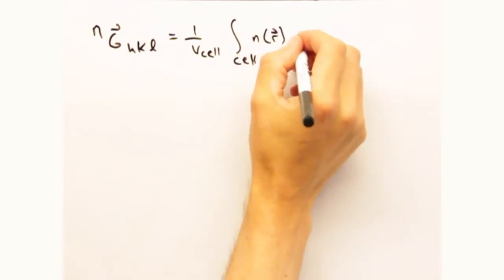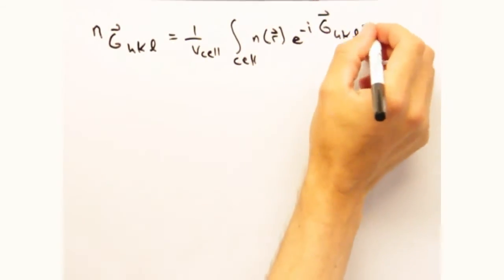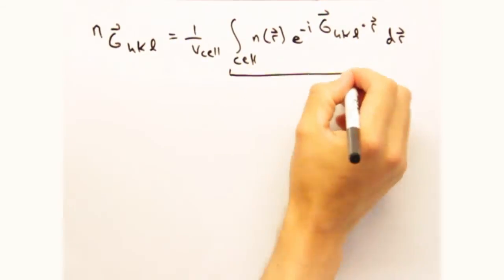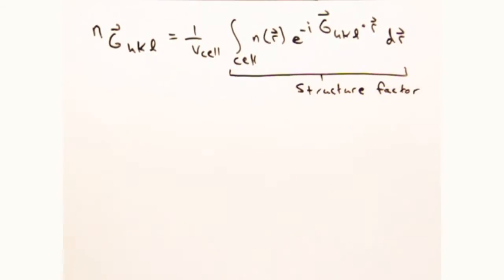But now let's look back at our original equation for n sub g sub hkl. This integral portion effectively represents the scattering density within one unit cell, and this is what we are going to call the structure factor.